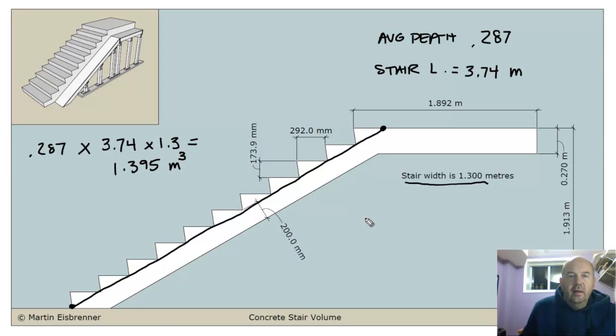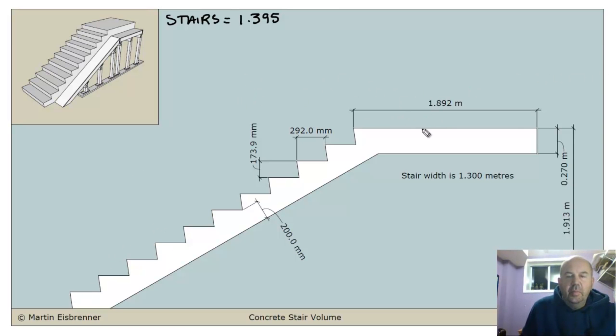1.395 cubic meters. And where can I hide that number so it doesn't get lost? Put it up here. Stairs. 1.395. Perfect. And now, next step is calculating the volume of the landing so that we can add it to the stairs.